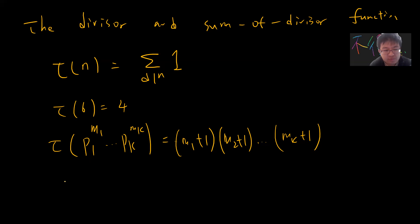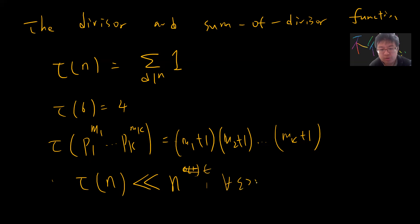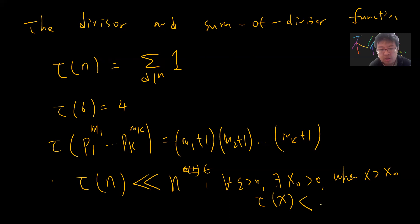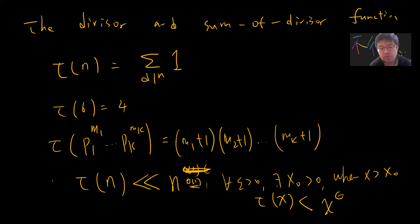From the formula for τ(n) you can prove the famous result that τ(n) = O(n^ε): for any ε > 0 there exists x₀ such that for all x > x₀, τ(x) < x^ε. In computer science or analytic number theory language, τ(n) = o(1) — here o is small-o, not big-O.